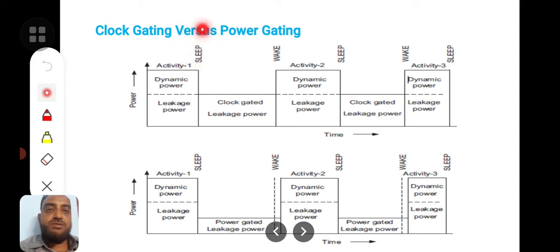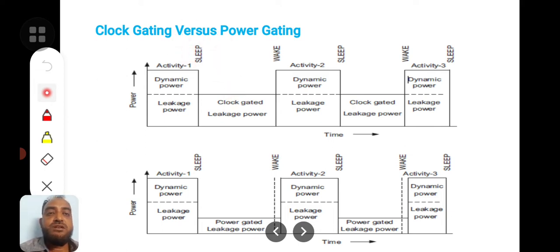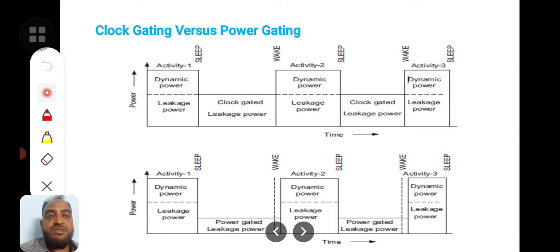Now, when the circuit is put to sleep, we will cut off the clock. So this dynamic power dissipation will not be there — only leakage power dissipation will remain. This is called clock-gated leakage power.